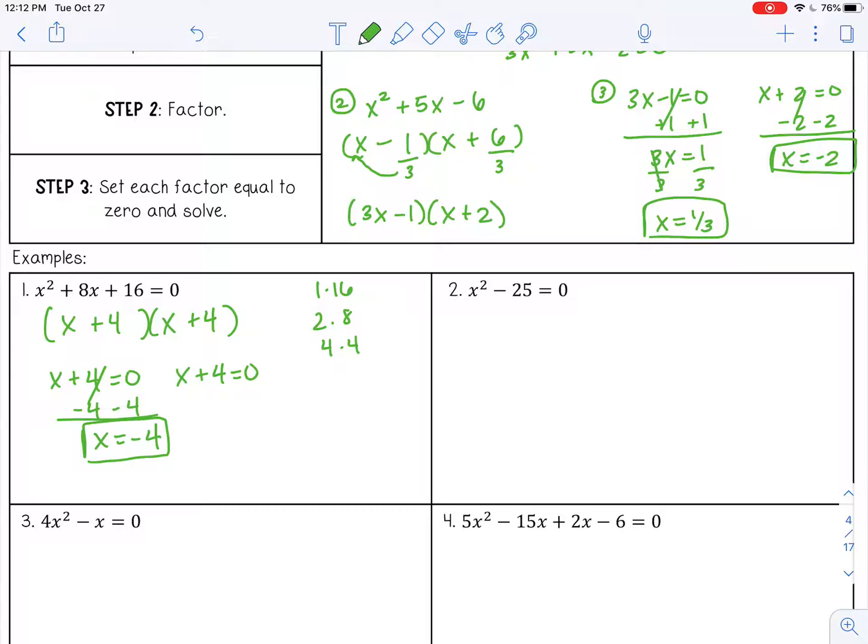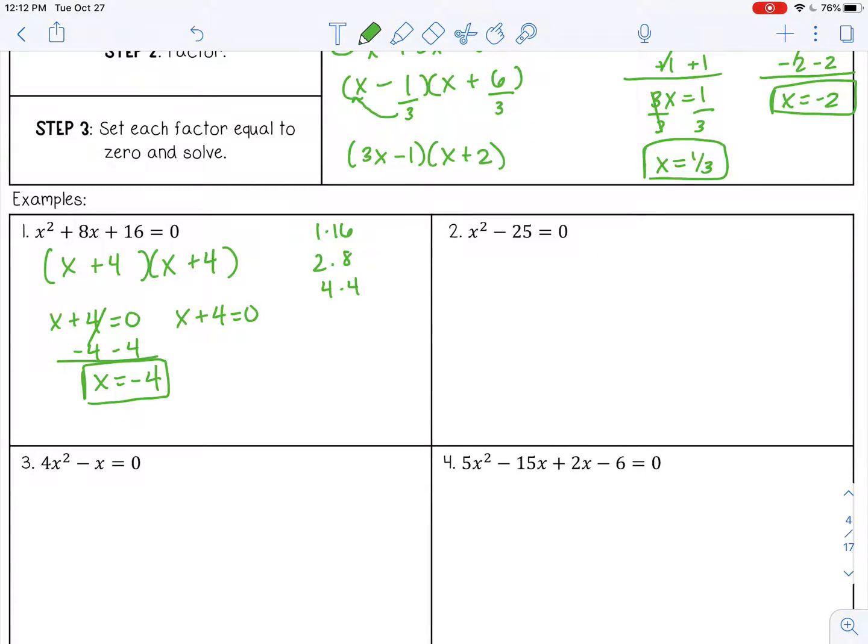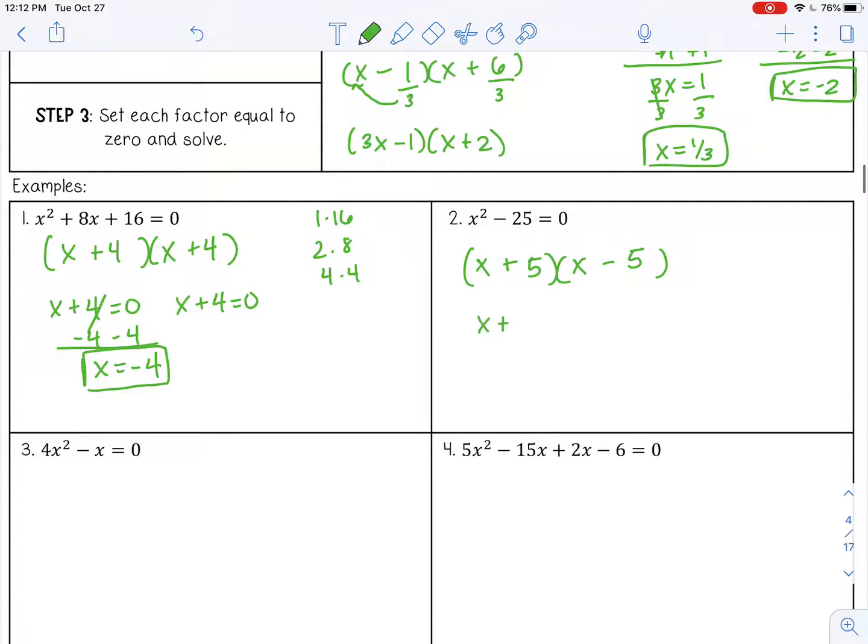Number two, this is a special case, the difference of two squares. You open two parentheses, x and x. The square root of 25 is five, plus and minus. Set both of those equal to zero and solve. X equals negative five, x equals positive five. That quadratic function has two real solutions at negative five and positive five.